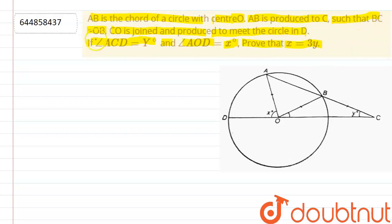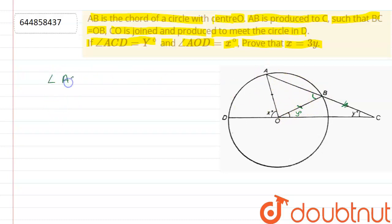It is given that BC is equal to OB, which means triangle BOC is an isosceles triangle. Since it is isosceles, the base angles are equal, so angle OCB is also Y degrees. Now, AC is a straight line, so angle ABO is the external angle of triangle OBC. Therefore, angle ABO equals Y plus Y, which is 2Y.